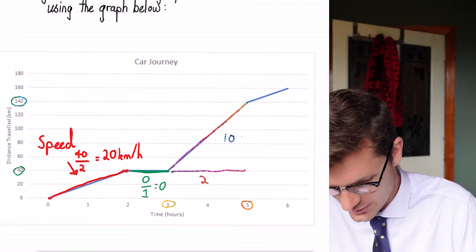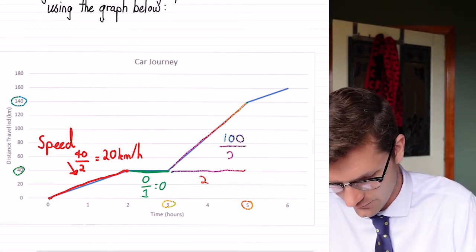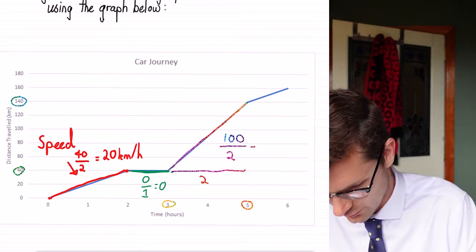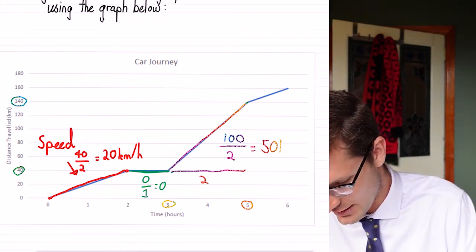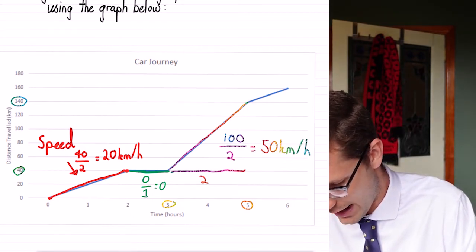So for this one, the distance traveled is 100 kilometers divided by the hours. So we were traveling at 50 kilometers per hour.